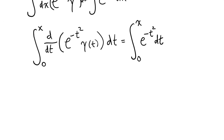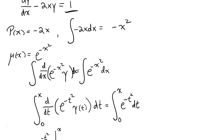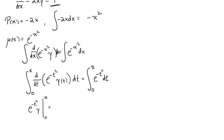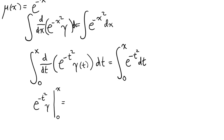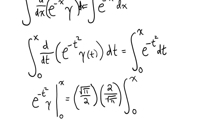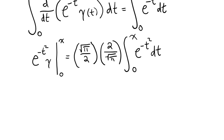When we evaluate the integrals, the d/dt and the dt cancel out, and we have e to the minus t squared times y evaluated from 0 to x. This looks very similar to the error function defined above, except the error function has a factor of 2 over the square root of pi. So what we can do is multiply by the square root of pi over 2, then multiply by 2 over the square root of pi — these two cancel to give 1 — and then multiply by the integral from 0 to x of e to the minus t squared dt.